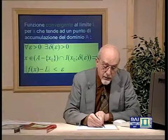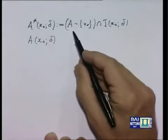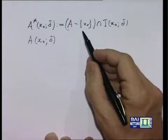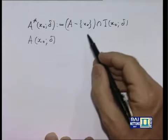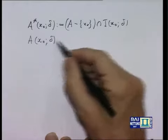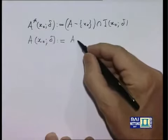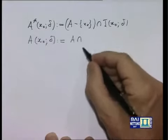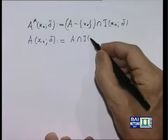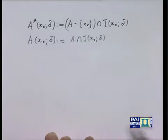Fra un istante mi servirà anche un insieme analogo, in tutto simile al precedente, ma in cui questa eliminazione, questa soppressione dell'elemento x₀ non viene effettuata. Utilizzerò il simbolo A(x₀, delta): è semplicemente l'insieme degli elementi di A che distano da x₀ meno di delta, dunque l'intersezione fra A stesso e l'intorno di centro x₀ e raggio delta.